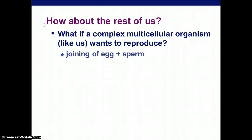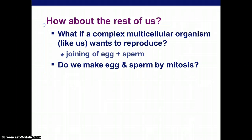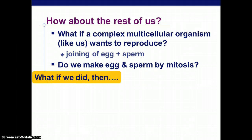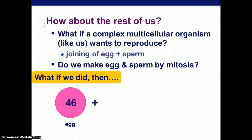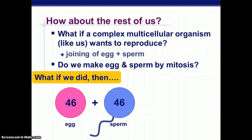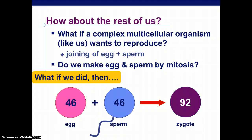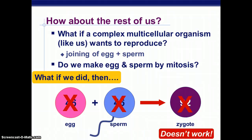But what about the rest of us? If a complex multicellular organism wants to reproduce, they have to join egg and sperm. But do we make egg and sperm by mitosis? Well, if we did, we would have an egg with 46 chromosomes combining with a sperm with 46 chromosomes, creating a zygote with 92. This does not work, so we cannot use mitosis to make egg and sperm.